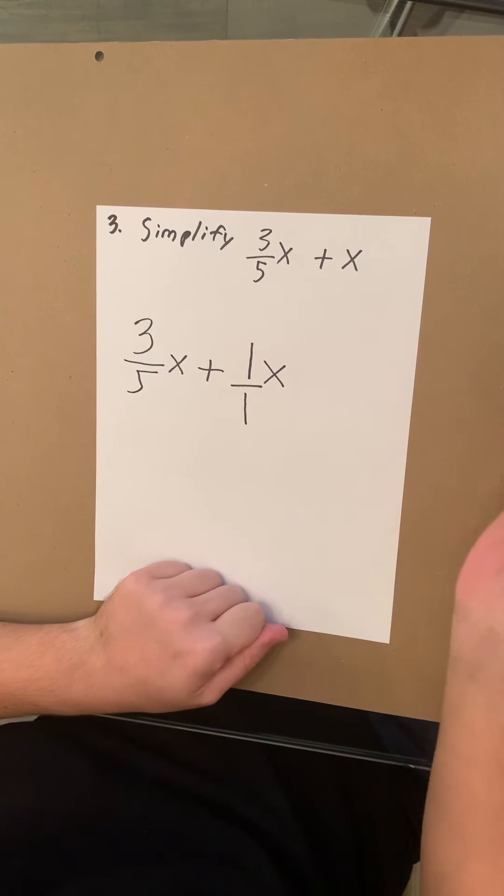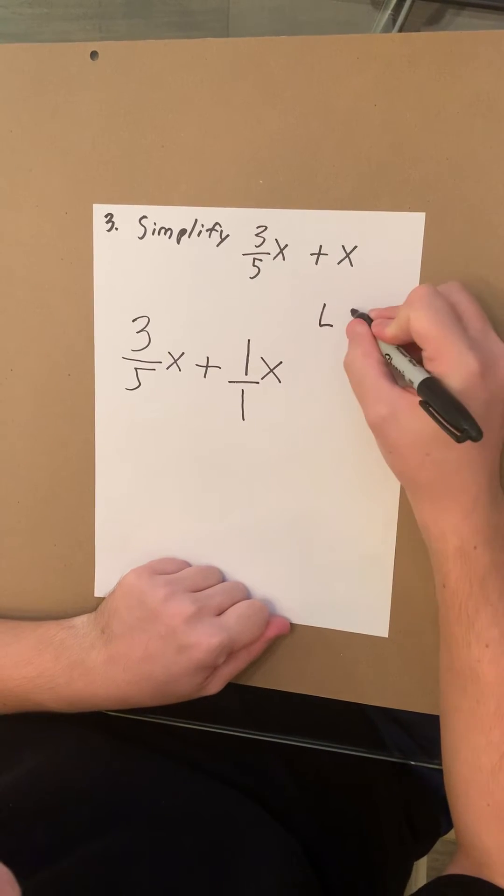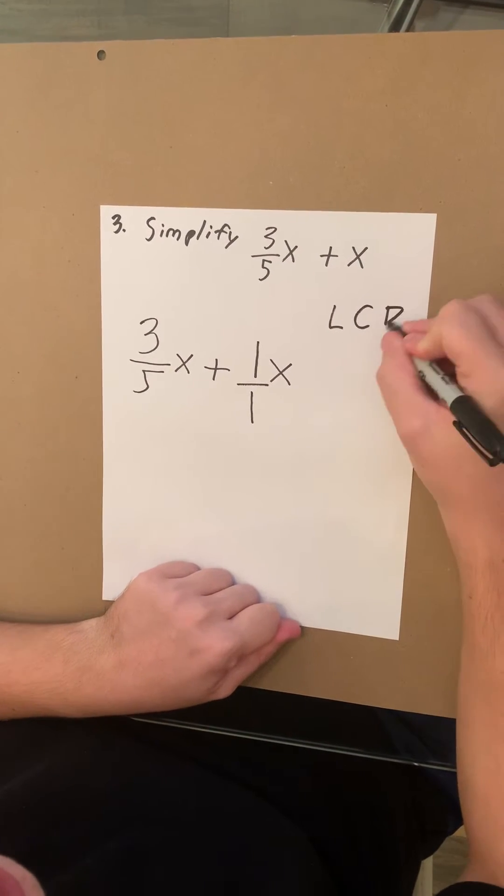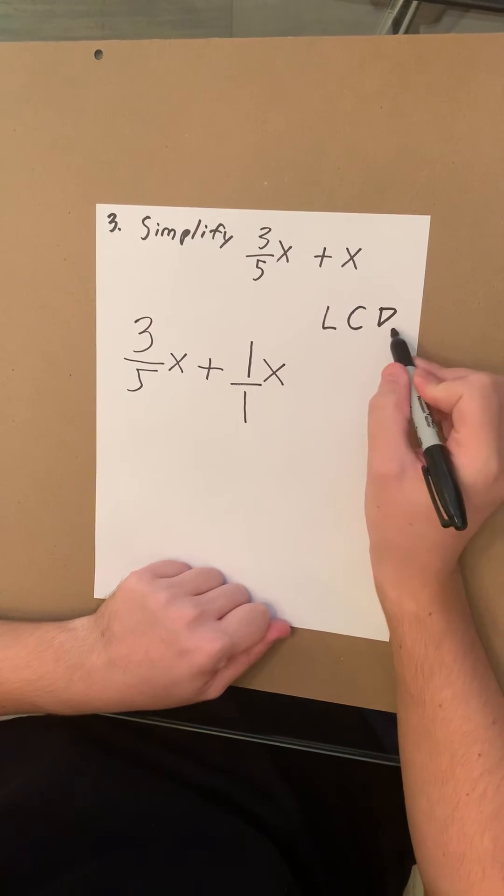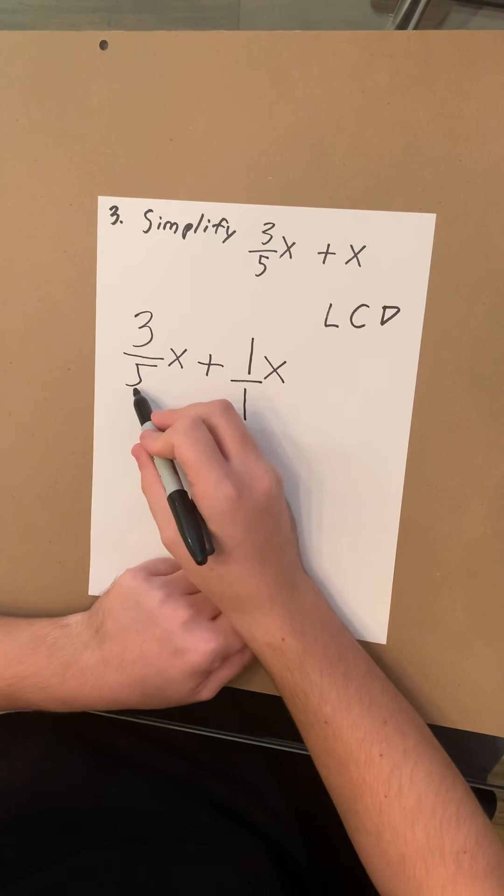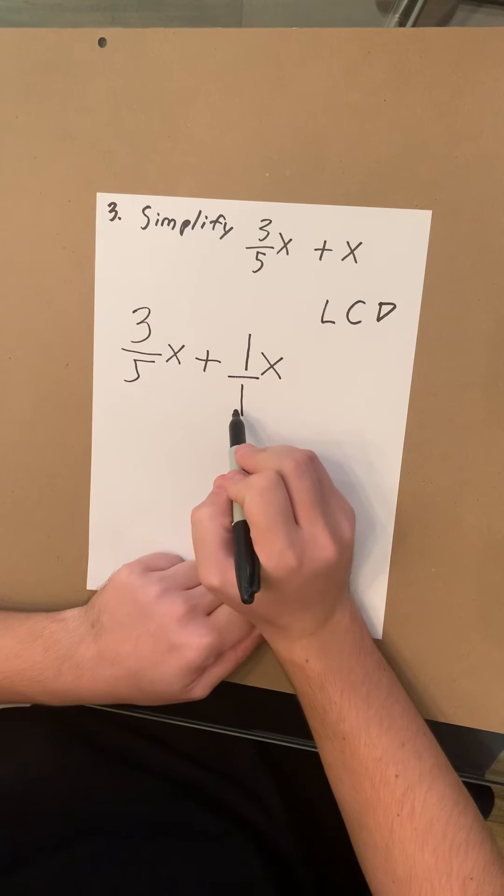So what you're gonna have to do is find the LCD, which stands for least common denominator. The least common denominator between 5 and 1 is 5.